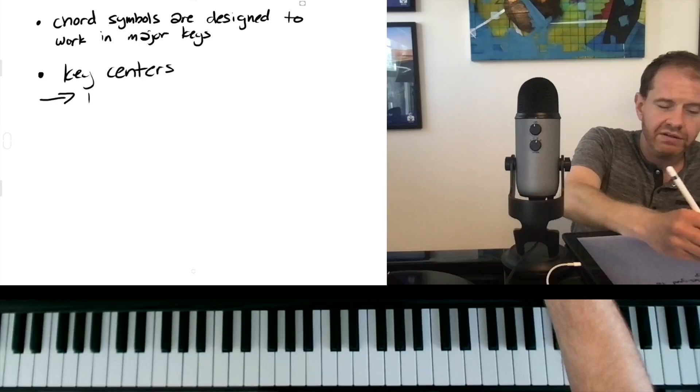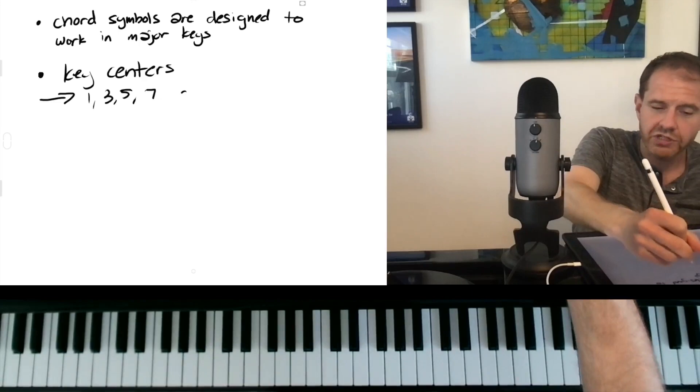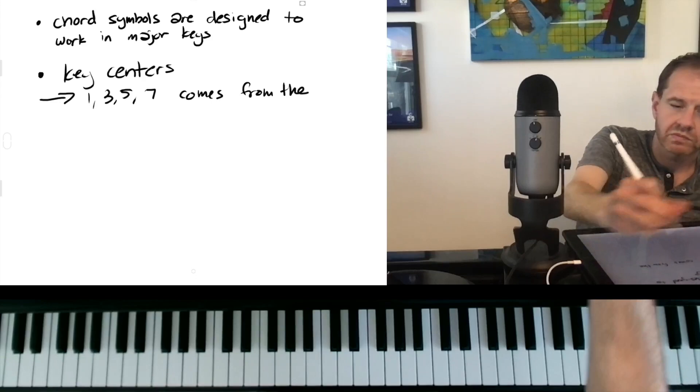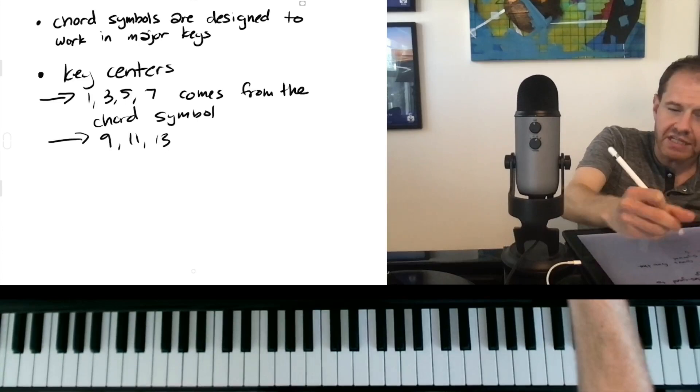So one way to view chords is that the basic chord, whatever's notated, comes from the chord symbol. And then the upper extensions, what we're gonna add to that chord that's not specifically notated, let's say the nine, 11, 13, is gonna come from the key center.